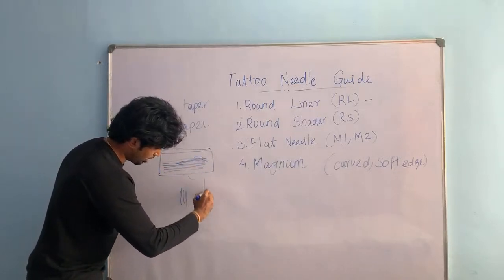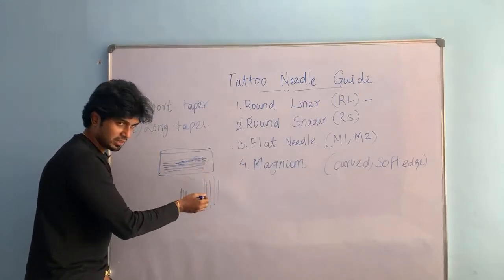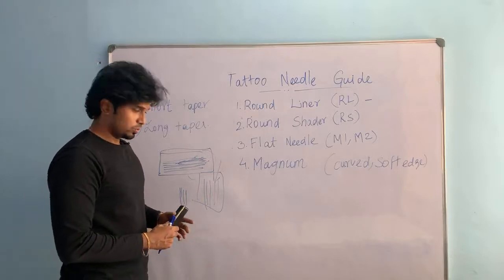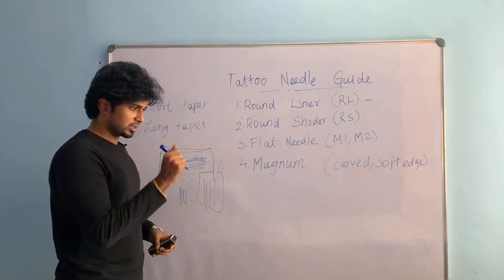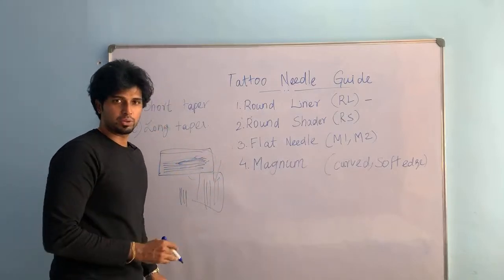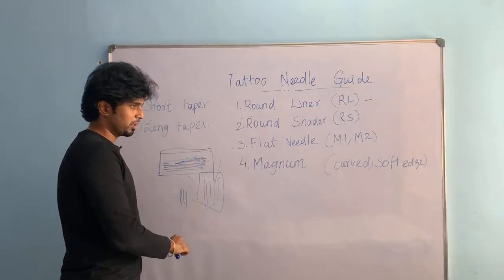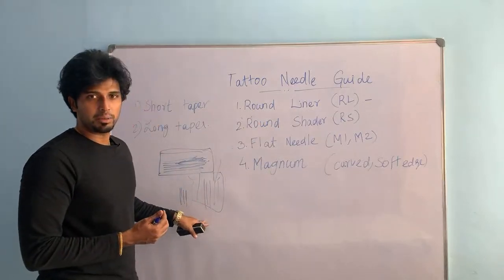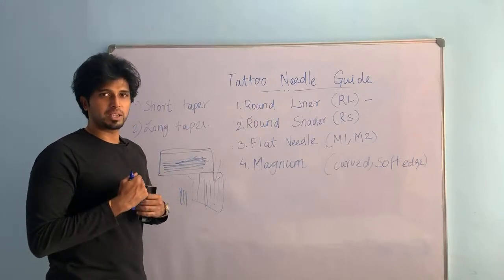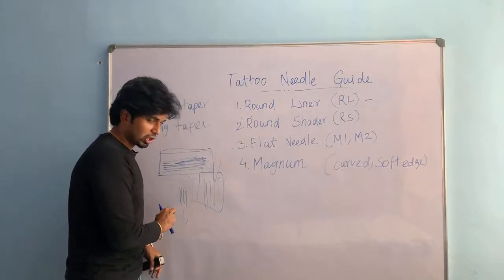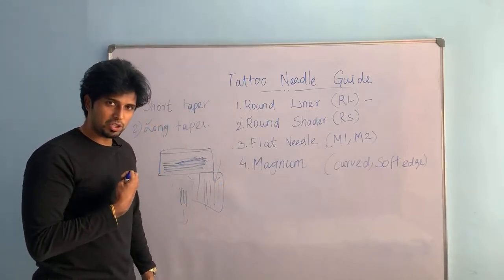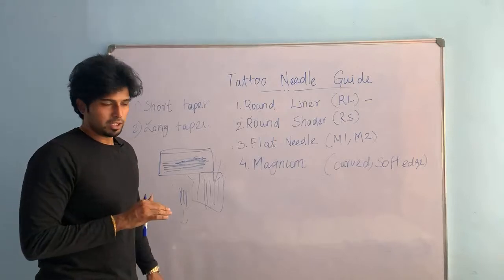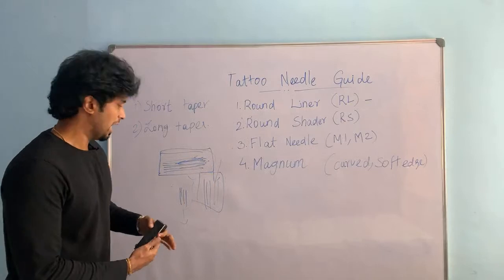With short taper the length is shorter, and with long taper the length is much longer. The long taper can hold a lot more ink inside, so when doing a tattoo it lasts for a longer duration — that is the main purpose. For shading with magnum, people go with long taper because it holds more ink and you can work longer. With short taper, you need to keep dipping into the ink more frequently.